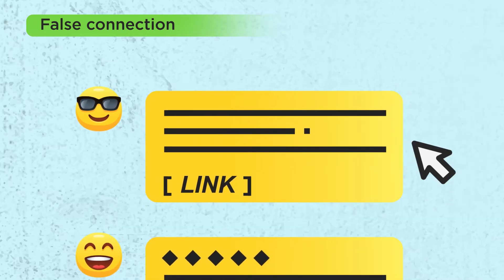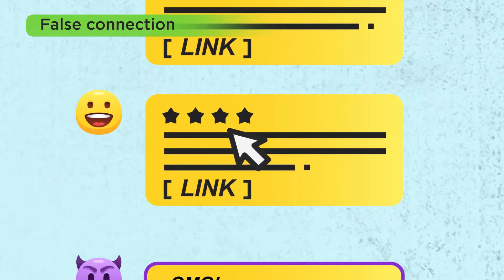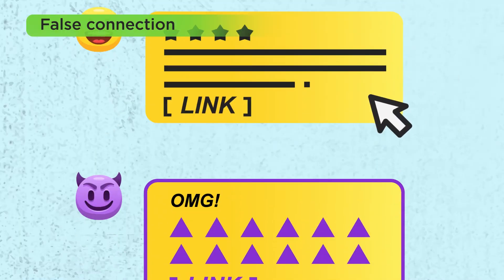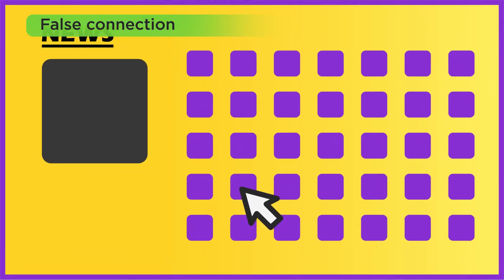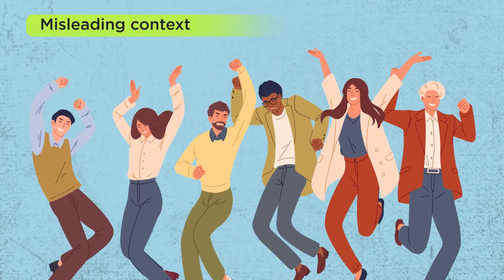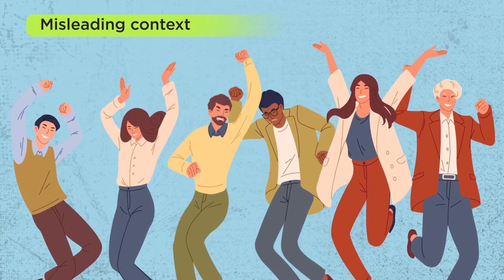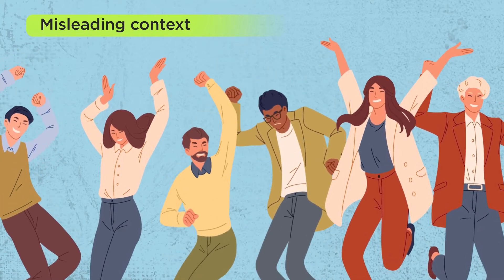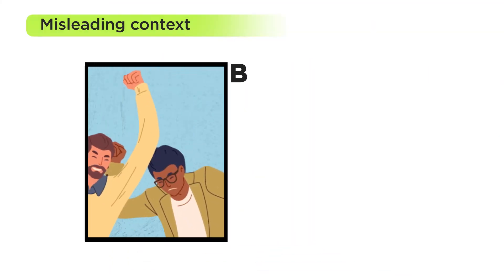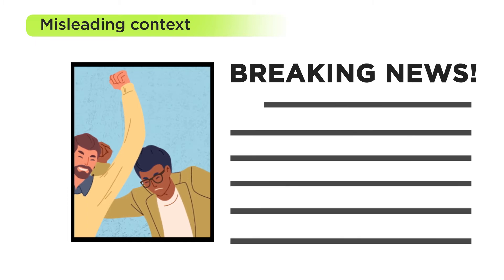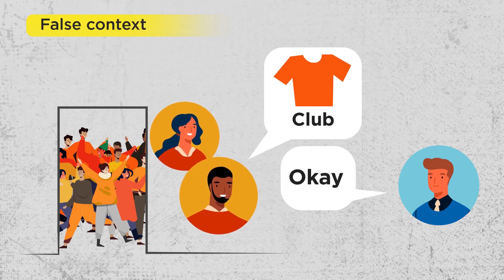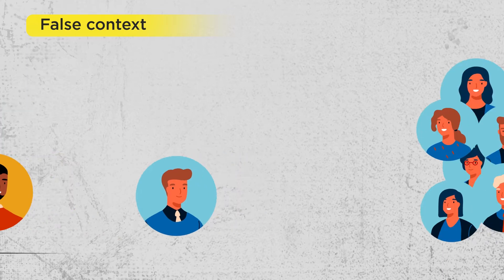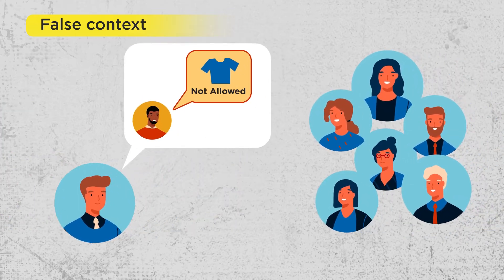False connection also happens in social media feeds, when the visuals and/or captions are used to portray a particular impression which is not actually backed up by the factual content within the link itself. Content deemed as misleading is when information is used misleadingly to frame issues or individuals in a certain way — by methods such as cropping photos strategically or selectively choosing quotes and statistics to present. False context is used to describe genuine content that has been reframed and recirculated with the original context taken out of it.